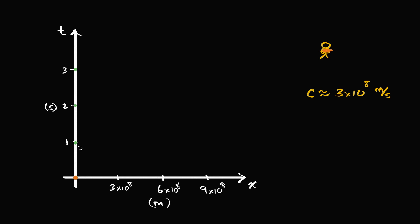After one second, where is my photon of light? The photon is moving in the positive x direction with a velocity of c — c meters per second. So after one second, it will have moved three times ten to the eighth meters. After two seconds, it will have moved six times ten to the eighth meters. I've intentionally scaled my axes so that the position of light relative to time is going to be at a 45 degree angle — and that's just an artifact of how I've picked my axes.